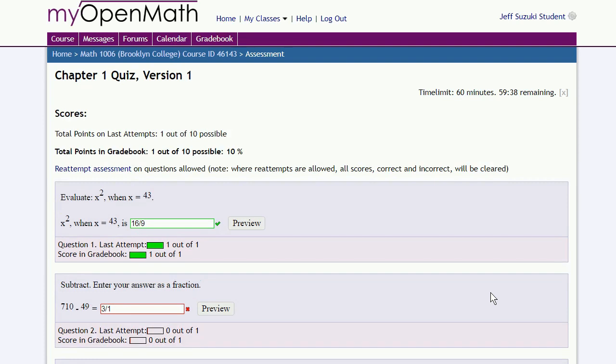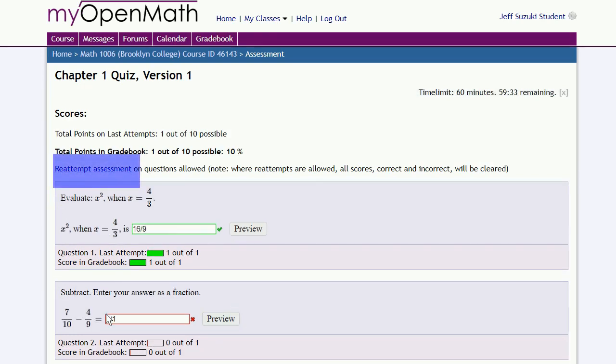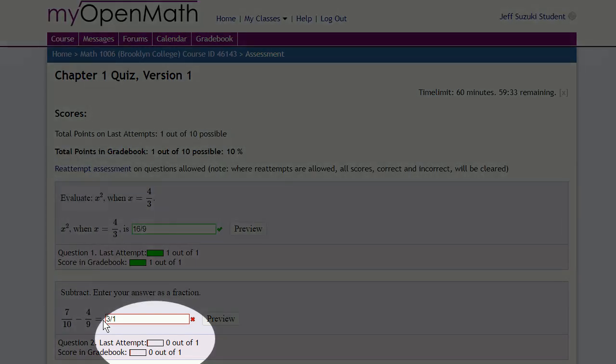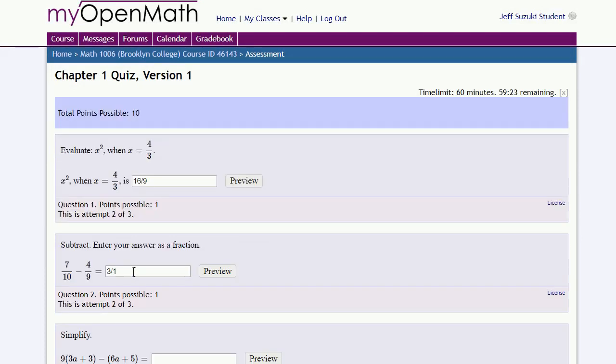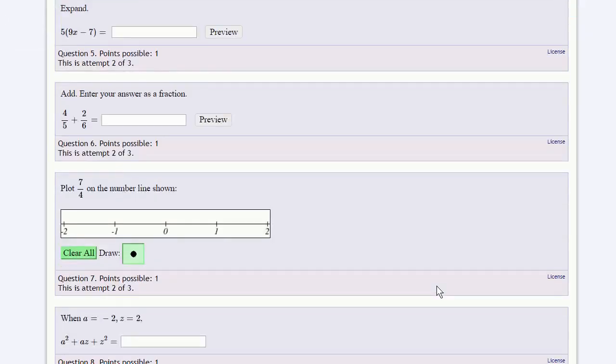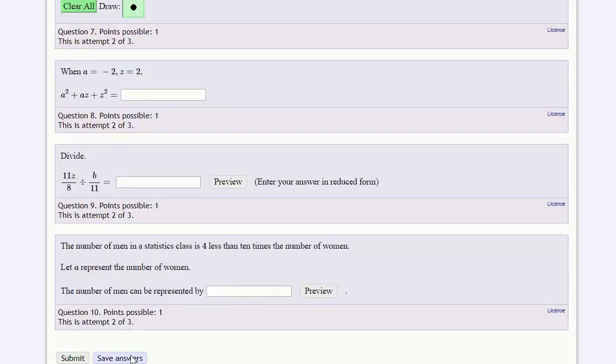And see your score. Now as long as you're within the time limit, you may fix your answers. You can re-attempt the assessment. So here we see the answer to our second question is incorrect, so let's go fix it. Maybe answer another question we skipped. We can save our answers.